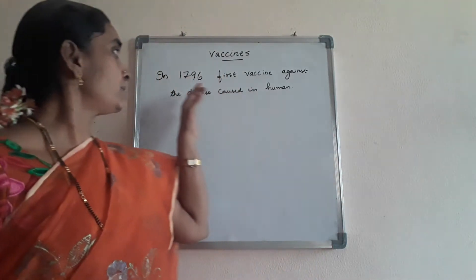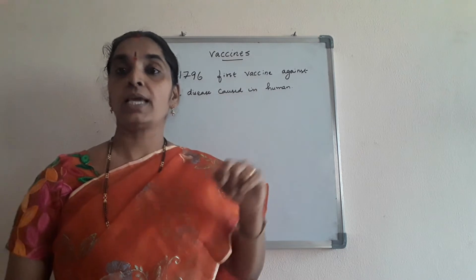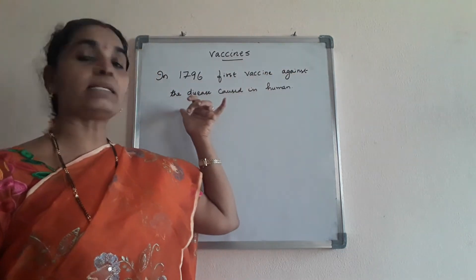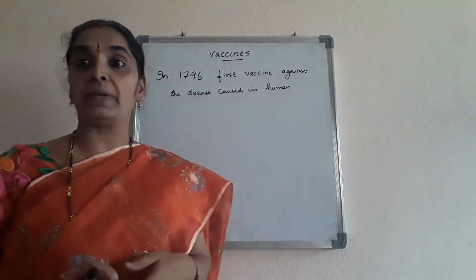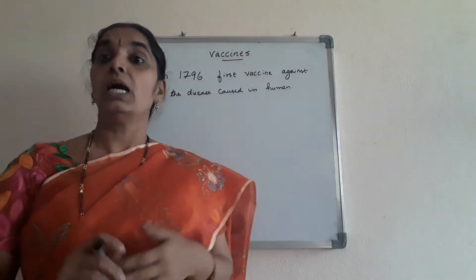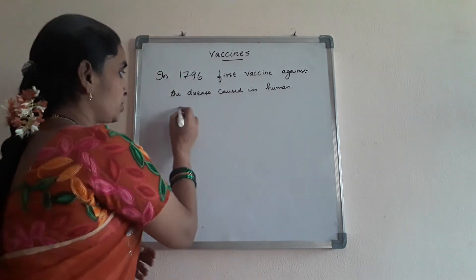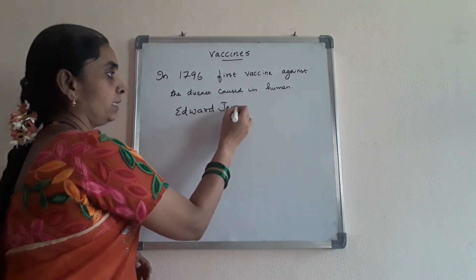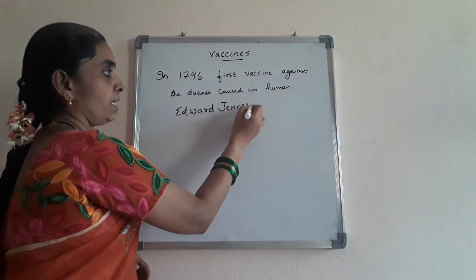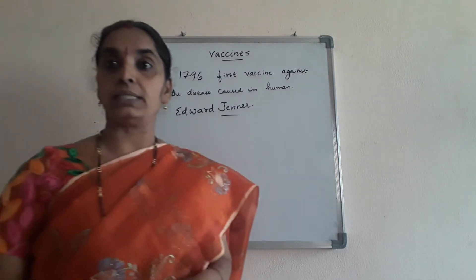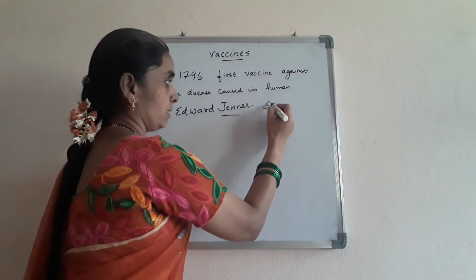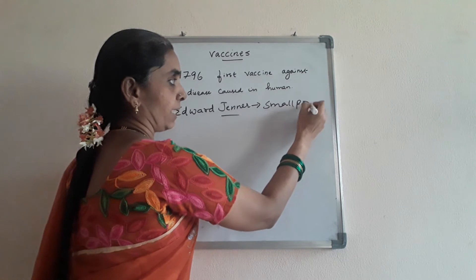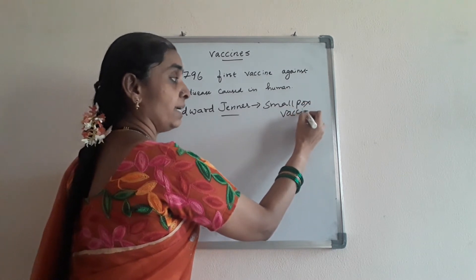Now, the invention of the vaccine. In 1796, the first vaccine against a human disease was discovered by Edward Jenner. Edward Jenner in 1796 discovered the smallpox vaccine.